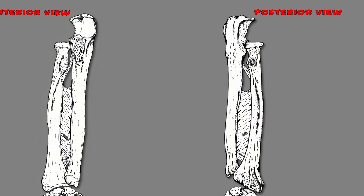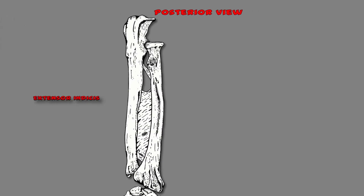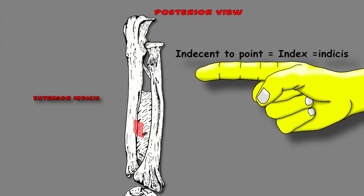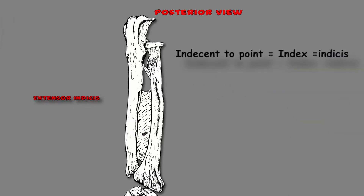Back to the posterior view. Next up is the extensor indicis muscle. It originates on the distal posterior ulna bone and the interosseous membrane. The word indicis is Greek for index, so this muscle inserts on your index finger — your pointer finger, which is your second digit. When you see indicis, think index and remember that.